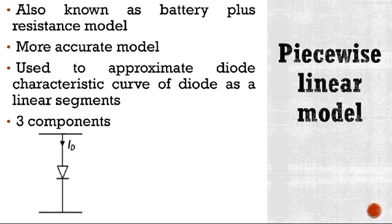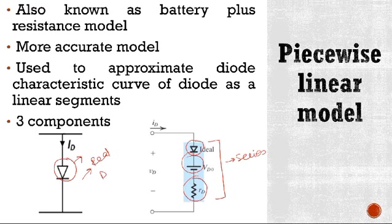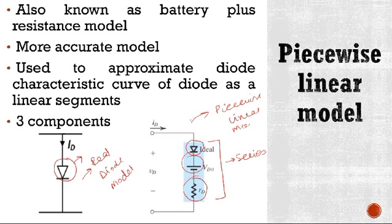This is the real diode model. In the piecewise linear model, this diode is replaced with an ideal diode, a voltage source, and a resistor — all three components connected in series. So this is your real diode model, and this is the piecewise linear model.